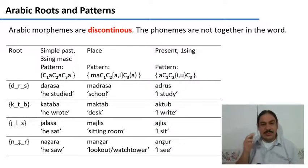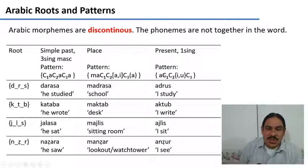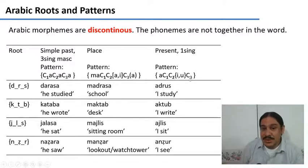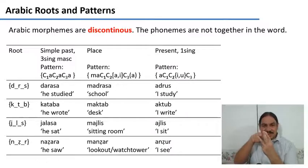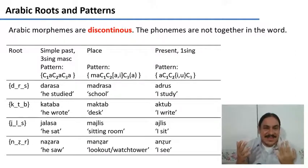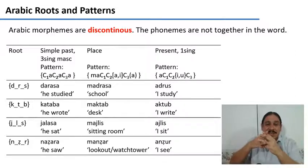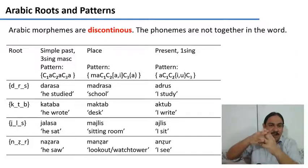This also works for the present first person singular pattern — 'I study,' 'I write,' 'I sit,' 'I see.' The pattern is an A before the first consonant, then the second consonant, then an I or U depending on the verb, then the third consonant. As you can see, the roots and the patterns interleave. They are discontinuous because the sounds in the roots and the sounds in the patterns are never next to one another, but they form a complete word.